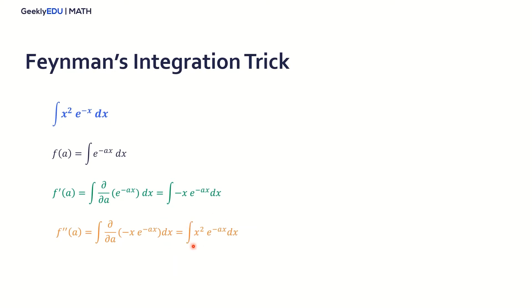And see now that this function here is almost the same as our original. Now note that if a equals 1, we have exactly our original integral. So that's what Feynman proposed us to do. That's his trick. We want to find a certain function of a that's quite similar to our original one, or is exactly our original one when a assumes a certain value.